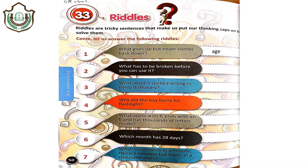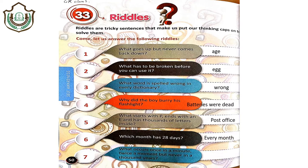Second riddle: what has to be broken before you can use it? That's an egg. What word is spelled wrong in every dictionary? That is the word 'wrong' — because we always spell it as W-R-O-N-G. Why did the boy bury his flashlight? Because the batteries were dead. What starts with P, ends with E and has thousands of letters inside? That's a post office. Which month has 28 days? Every month has 28 days. What occurs once in a minute, twice in a moment but never in a thousand years? That's the letter M.